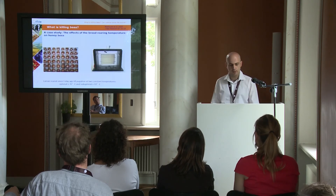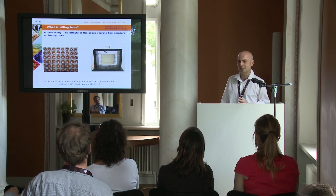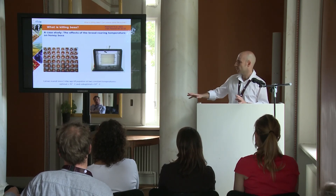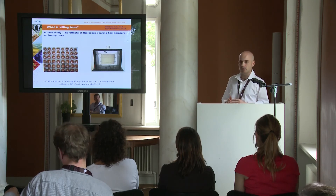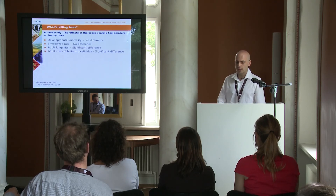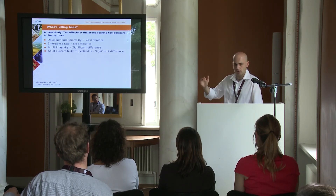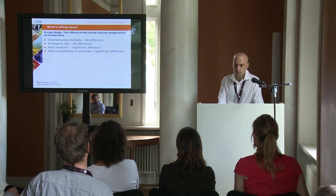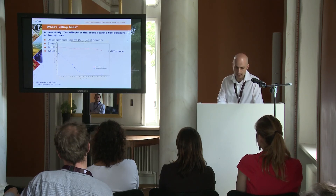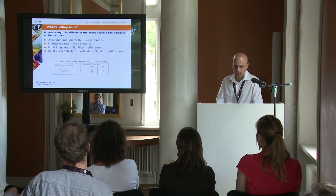We performed an experiment rearing young one-day-old larvae in standardized lab conditions. One group was reared at 35°C — the optimal temperature — and another at 33°C — the sub-optimal temperature. We measured developmental mortality, emergence rate, adult longevity, and adult sensitivity to pesticide. We found no difference in developmental mortality or emergence rate, meaning all bees reached the adult stage. However, adult longevity was affected: bees reared at optimal temperature lived longer than those reared at sub-optimal temperature. And bees reared at sub-optimal temperature were more sensitive to the insecticide dimethoate.